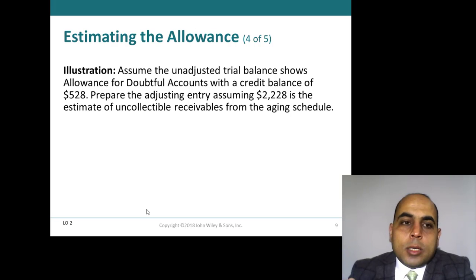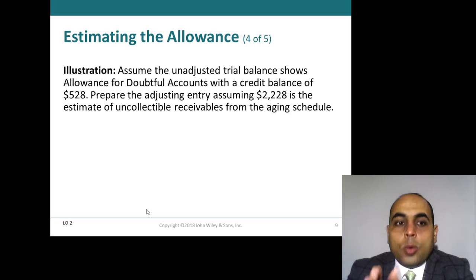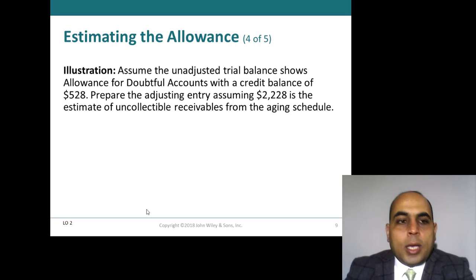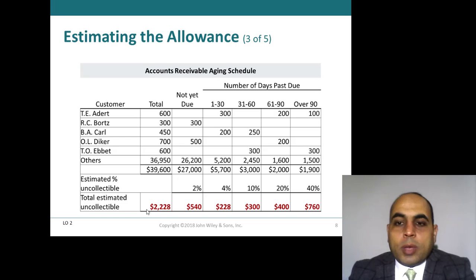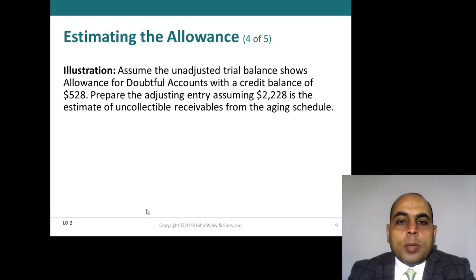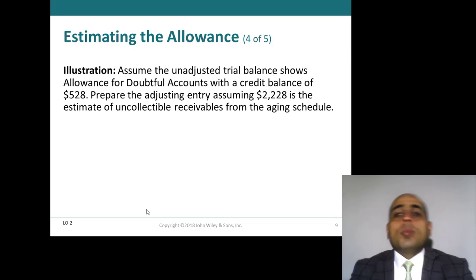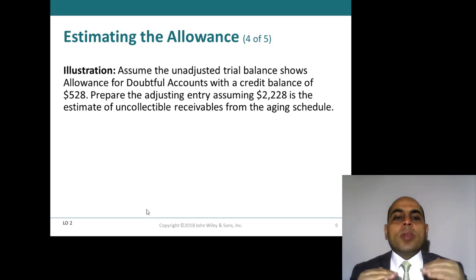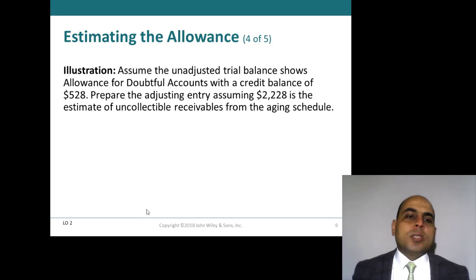Assume the adjusted trial balance shows allowance for doubtful accounts with a credit balance of $528. Already we have a balance of $528. The normal balance of allowance for doubtful accounts is credit. Prepare the adjusting entry, assuming $2,228 is the estimated uncollectable receivables from the aging schedule. We already have $528 recorded.